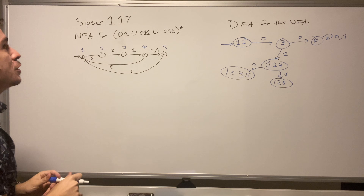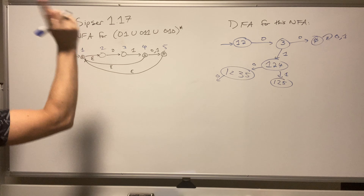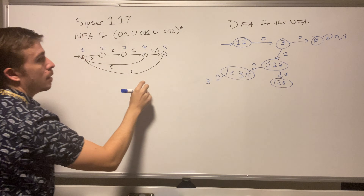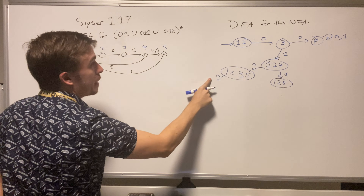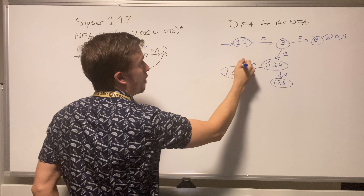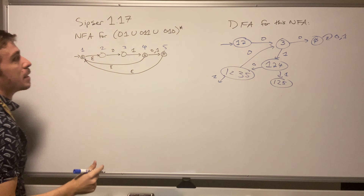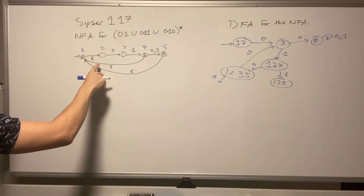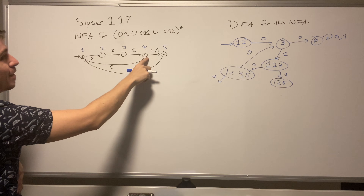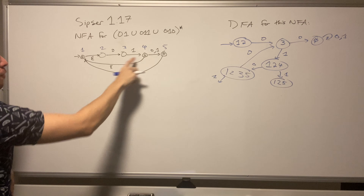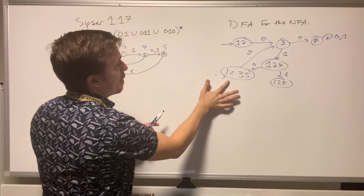From state one-two-three-five on zero: state one goes nowhere, two goes to three, three goes nowhere, five goes nowhere — so we only go to three, which is already a state we've made. On a one transition: one goes nowhere, two goes nowhere, three goes to four, and from four we epsilon to one and two — which is the state one-two-four we already made.